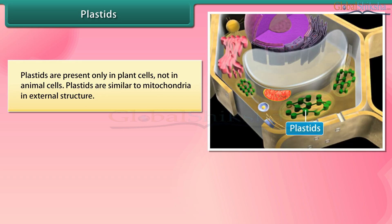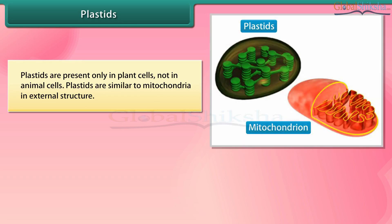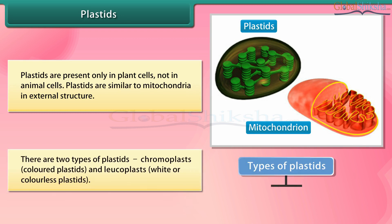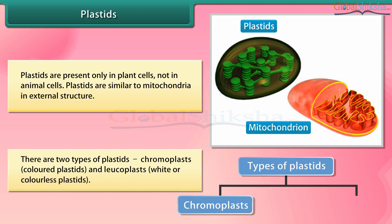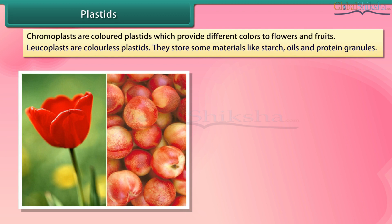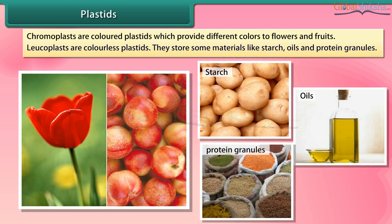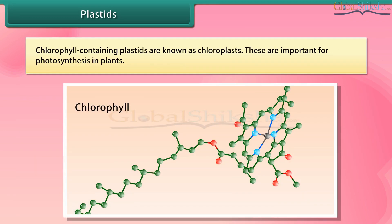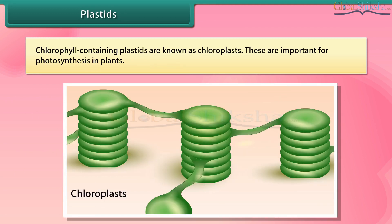Plastids are present only in plant cells, not in animal cells. Plastids are similar to mitochondria in external structure. There are two types of plastids: chromoplasts, which are colored plastids, and leucoplasts, which are white or colorless plastids. Chromoplasts provide different colors to flowers and fruits. Leucoplasts are colorless plastids that store materials like starch, oils, and protein granules. Chlorophyll-containing plastids are known as chloroplasts, and these are important for photosynthesis in plants.